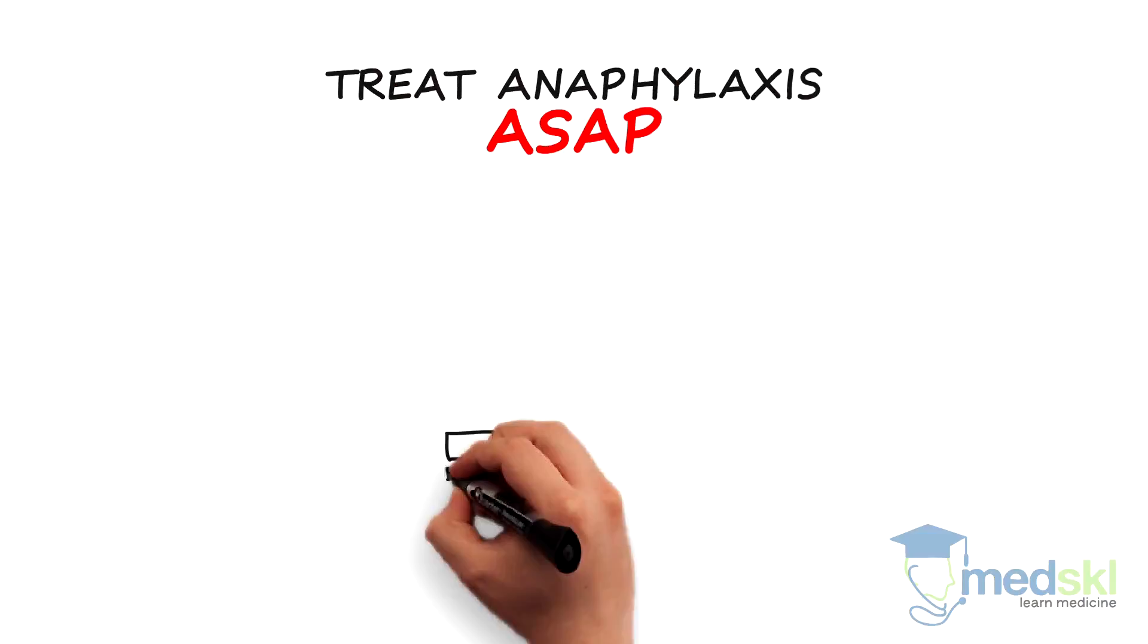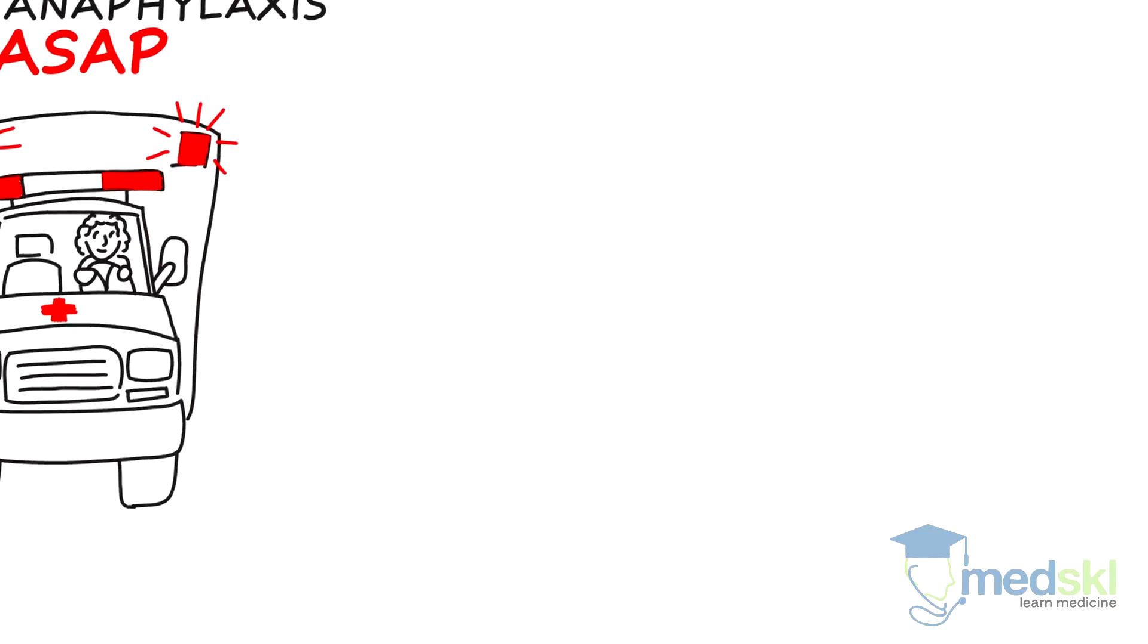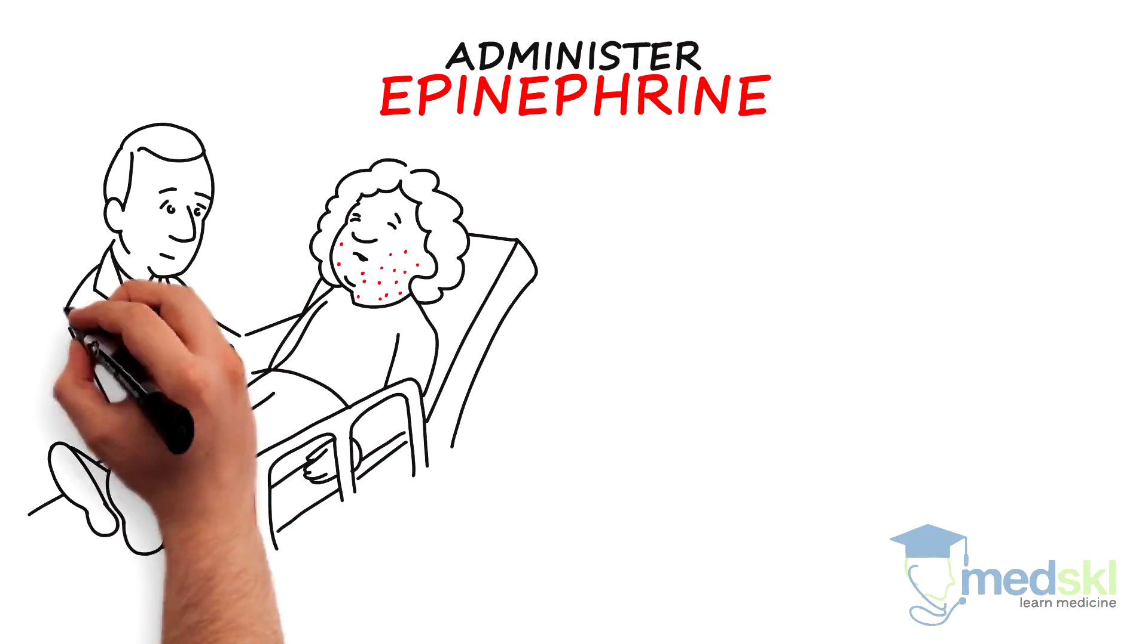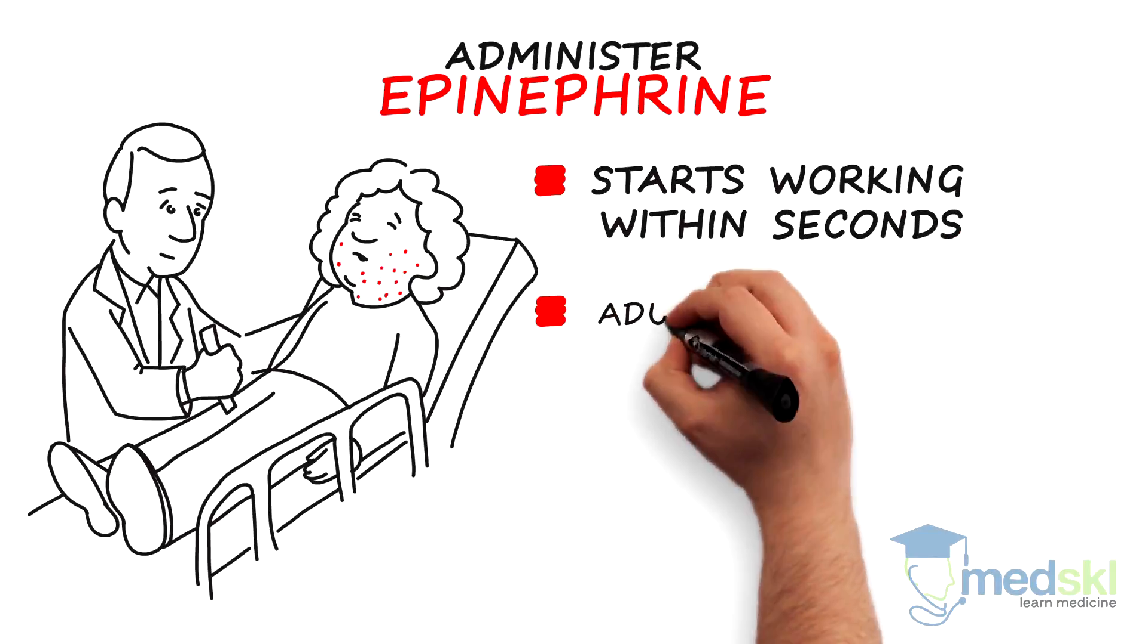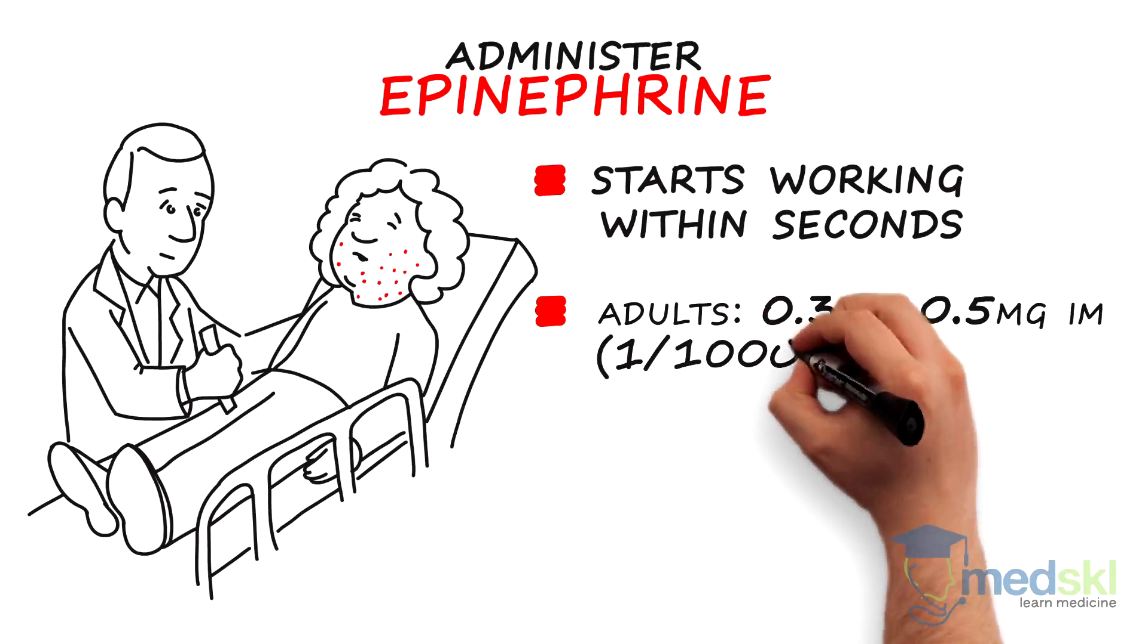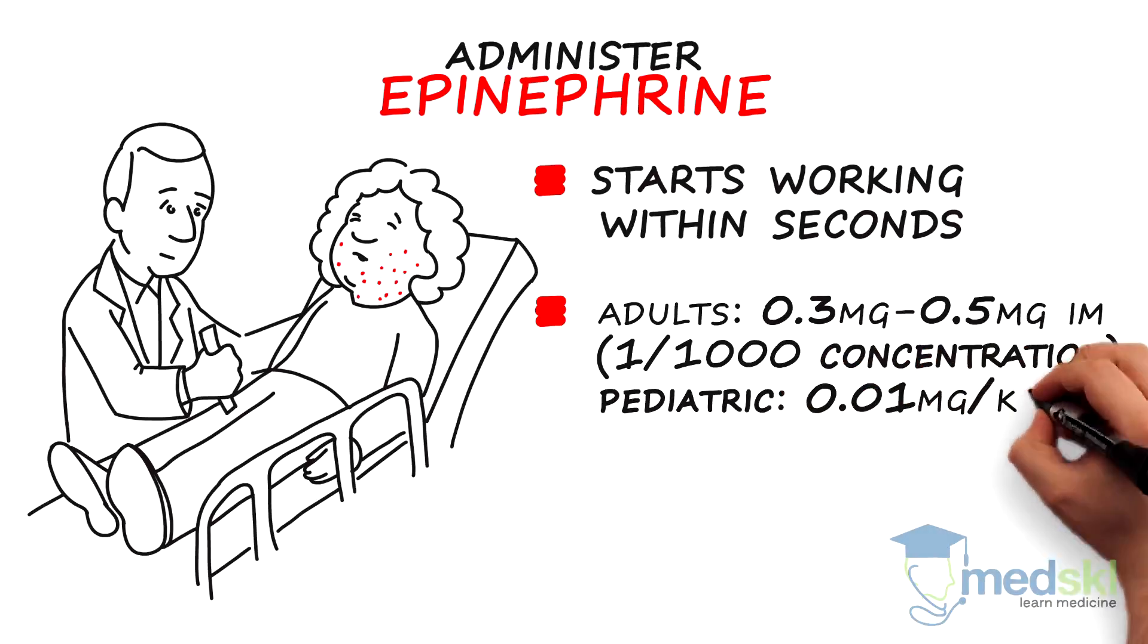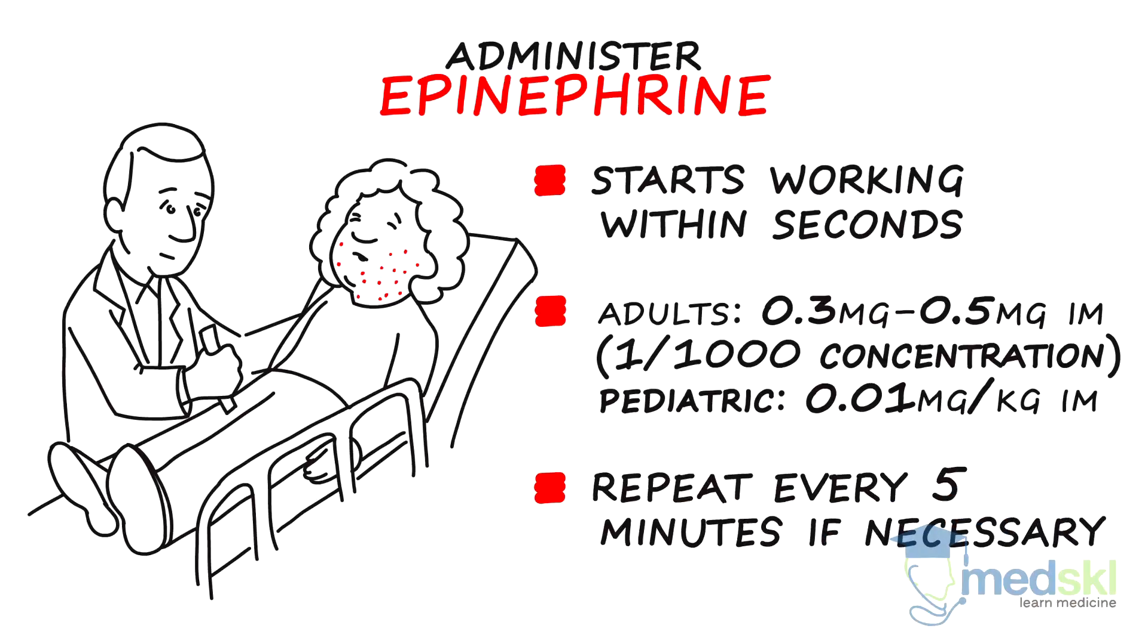The treatment of anaphylaxis must be started as soon as the condition is suspected. Time is of the essence. The most important drug to administer is epinephrine. This is what will save lives. Do not hesitate to give it. It starts working within seconds of being given. The dose is epinephrine 0.3 to 0.5 mg, the 1 in 1000 concentration, IM, usually given in the thigh. The pediatric dose is 0.01 mg per kilogram. Epinephrine can be repeated every 5 minutes if necessary.